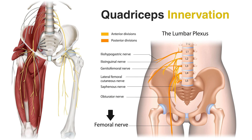The quadriceps muscle group is innervated by the femoral nerve, a major branch of the lumbar plexus. The femoral nerve originates from the ventral rami of spinal nerves L2, L3, and L4. It is one of the main nerves supplying motor and sensory innervation to the muscles of the anterior compartment of the thigh, including the quadriceps muscles.